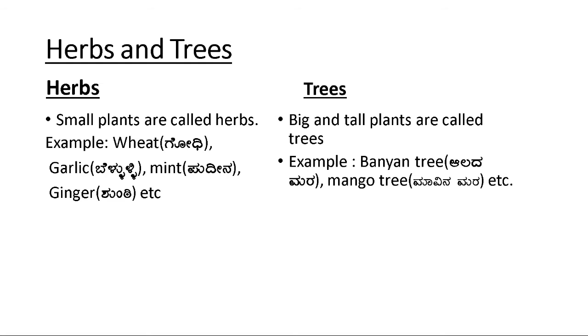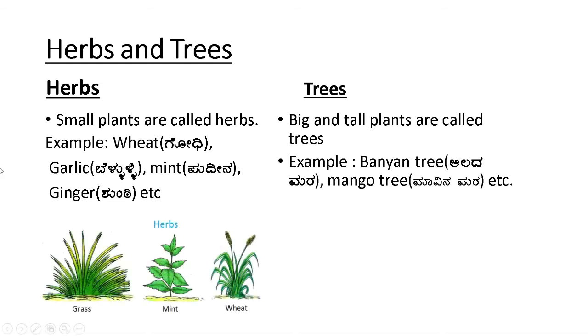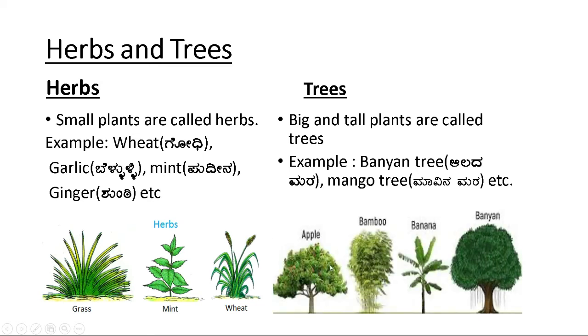So all those plants are big and tall, that's why they are called trees. Let us see some pictures here. You can see herbs example like grass, mint, wheat. You can see their size compared with trees. Trees are huge, big and tall, whereas herbs are small. Clear with this kids?